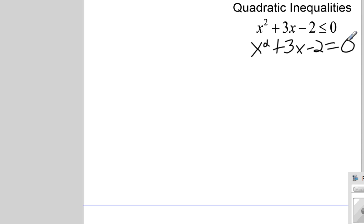So it would be really nice if this were factorable. Let's see. Are there factors of negative 2 whose sum is 3? All right, they both, 2 and 1, both have to be positive to add the positive 3. But if they're both positive, they don't multiply to a negative 2. So this is not factorable.